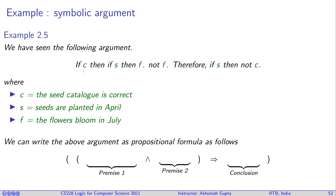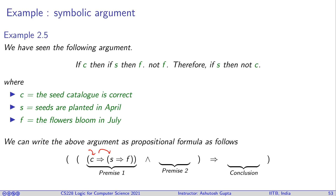So how do we do that? Essentially, whatever is in the argument is turned into a propositional operation. For example, 'therefore' is turned into an implication — you have two premises, premise 1 and premise 2, and they imply the conclusion. Premise 1 says C implies the formula S implies F, and premise 2 is the negation of F. The conclusion is that S implies the negation of C.